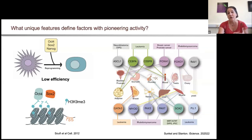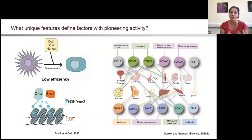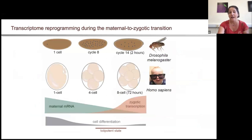So really, if we want to understand how these pioneer factors drive chromatin accessibility to regulate normal development and how mis-regulation of them leads to disease, what my lab studies is conserved developmental transitions. In particular, one of the developmental transitions we've really focused on is the initial stages of development.